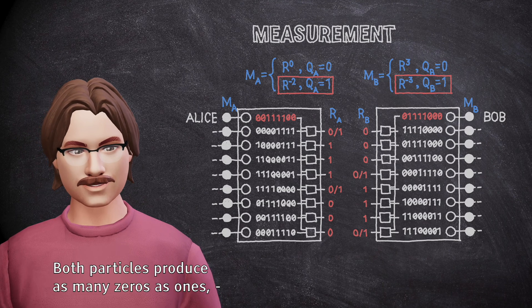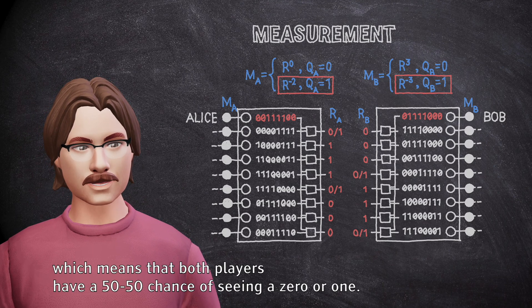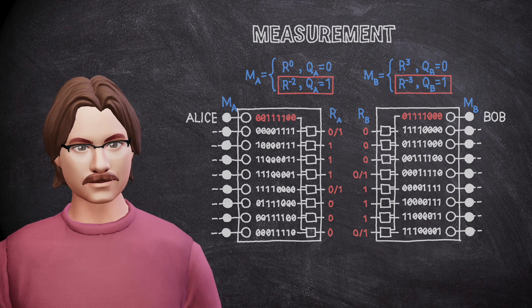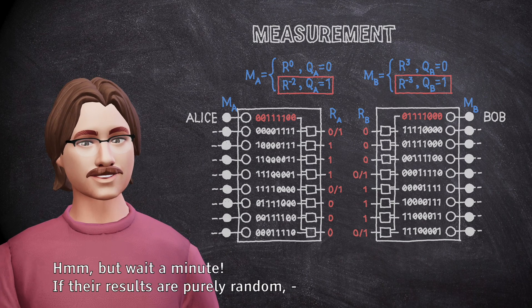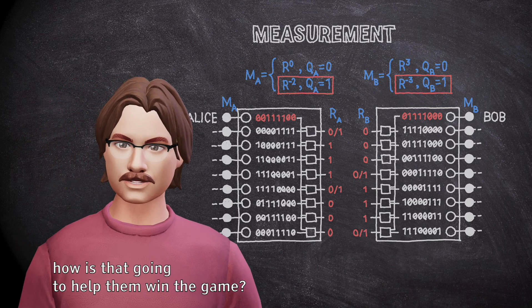Both particles produce as many zeros as ones, which means that both players have a 50-50 chance of seeing a zero or one. But wait a minute. If their results are purely random, how is that going to help them win the game?